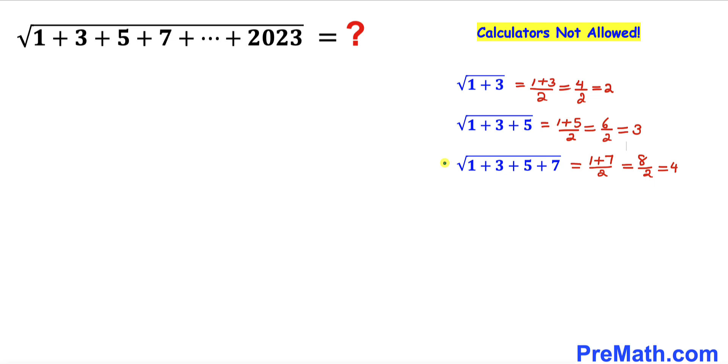Likewise, for another example, the square root of 1 + 3 + 5 + 7, we're going to focus on the first number and the last number, add them up and divide by 2, so it turns out to be 4.